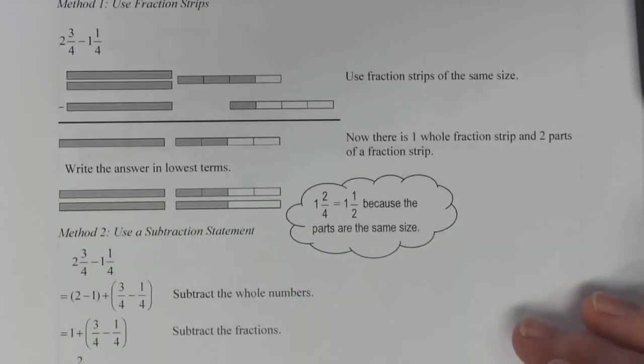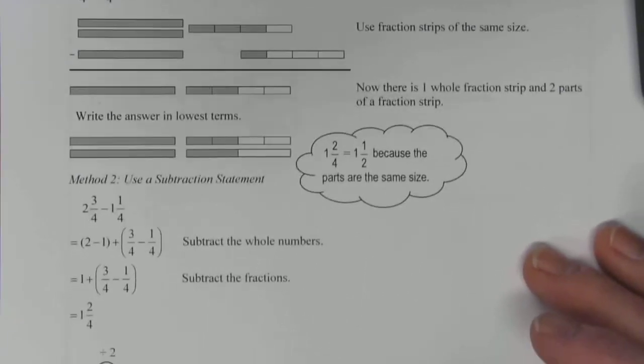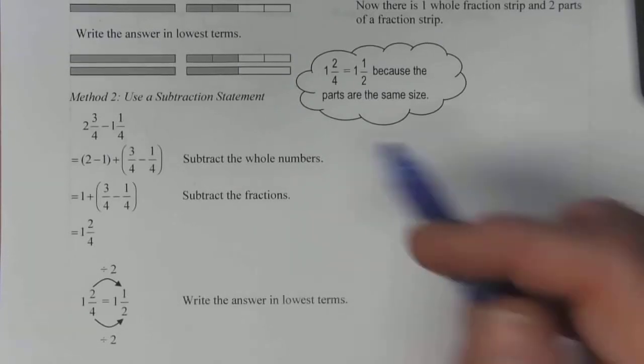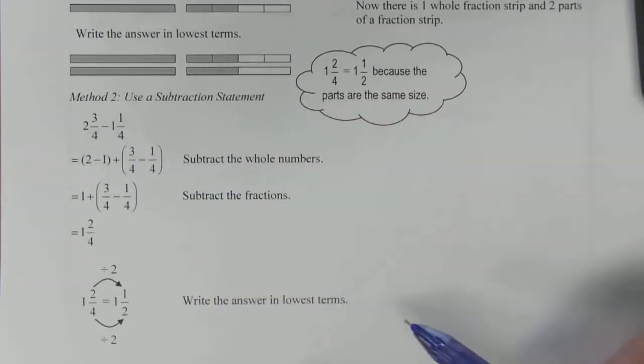So the second method is to use a subtraction statement. This is where we get down to working with the actual numbers. So same question here: two and three quarters minus one and a quarter.